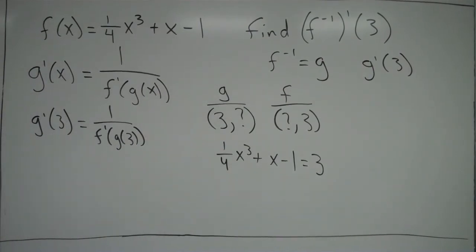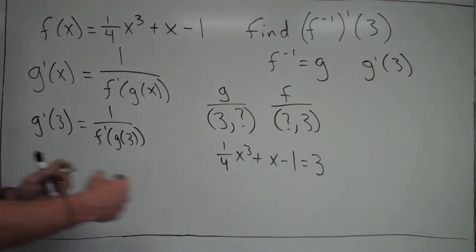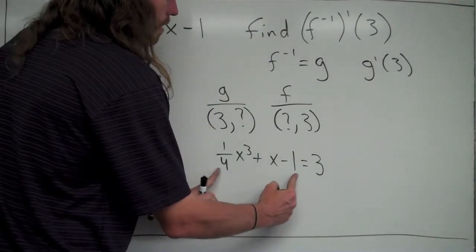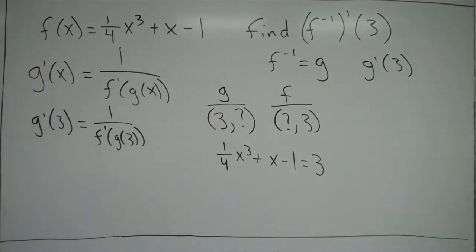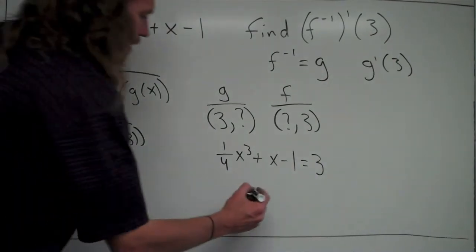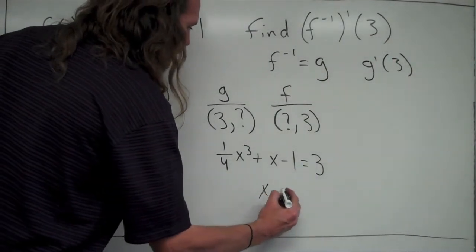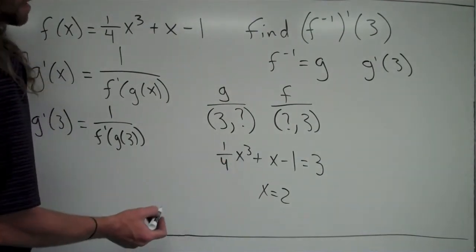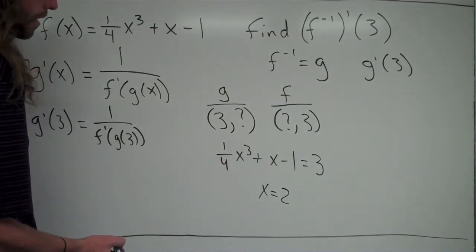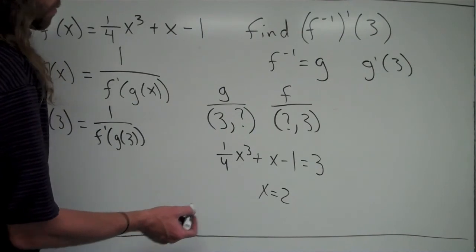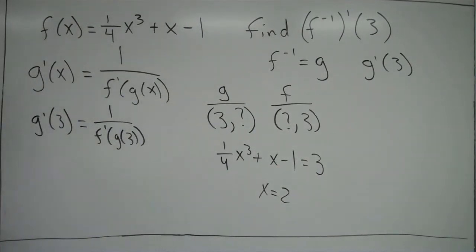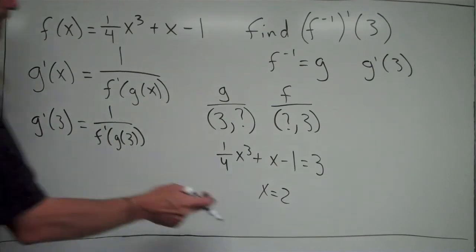you can use your calculator to solve these equations for you. You could plug this left-hand side into y1, plug the right-hand side into y2, use your second calc intersect feature, which I detail in another video, and you'll end up finding that the value here is actually 2. So x equals 2. And you can tell just by plugging it in. 2 to the 3rd is 8, 8 over 4 is 2, plus 2 is 4, minus 1 is going to be 3. So it works out when you plug it in that this is 2.